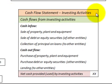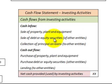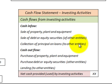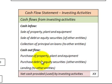Looking at our cash flow statement for investing activities, first we'd look at cash inflows — such as the sale of property, plant, and equipment, the sale of a debt or equity security we own of another entity, or collecting principal on a loan from another entity. Cash outflows would include the purchase of property, plant, and equipment or the purchase of debt or equity securities. We'd then find the net cash provided or used by these investing activities.